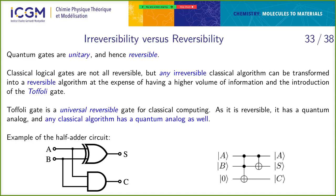The Toffoli gate is a universal reversible gate for classical computing. It means that any classical algorithm can, with some additional complexity, be translated into an equivalent algorithm that is reversible. So any classical algorithm can be made reversible if it's written differently, thanks to the Toffoli gate.